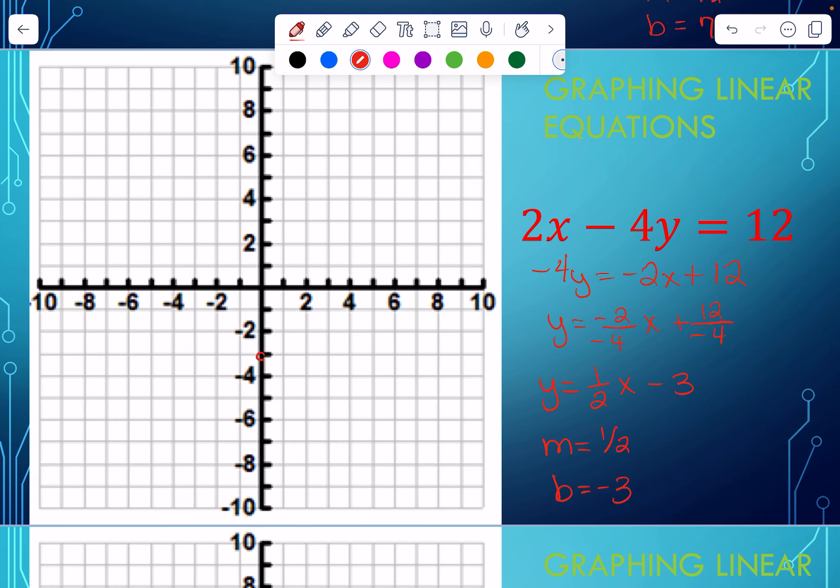So I'm going to start at negative 3. Since it is a positive slope, I'm going to go up 1, right 2. Up 1, right 2. Or remember, we can go down 1, left 2. Either one. It will get you the same slope. So just like before, a positive slope can go up and right or down and left.